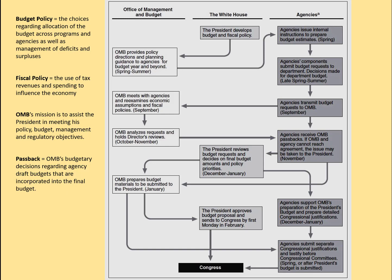OMB would then take a month or two to review them, hold hearings with the agencies, ask questions, and then mark up that budget and pass it back to the agency. This markup involves changes — yes you can do this, no you can't do that, changing the total amount of money available, and so on. The agencies would then rewrite their budget, be reviewed by the president and OMB, and approved. The agencies do have an opportunity to appeal those OMB passbacks, and in some cases those decisions may end up on the president's desk.